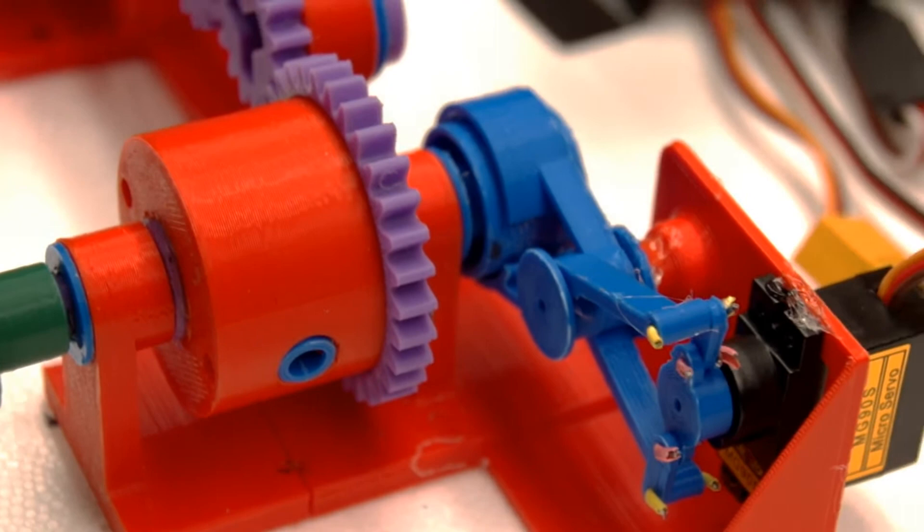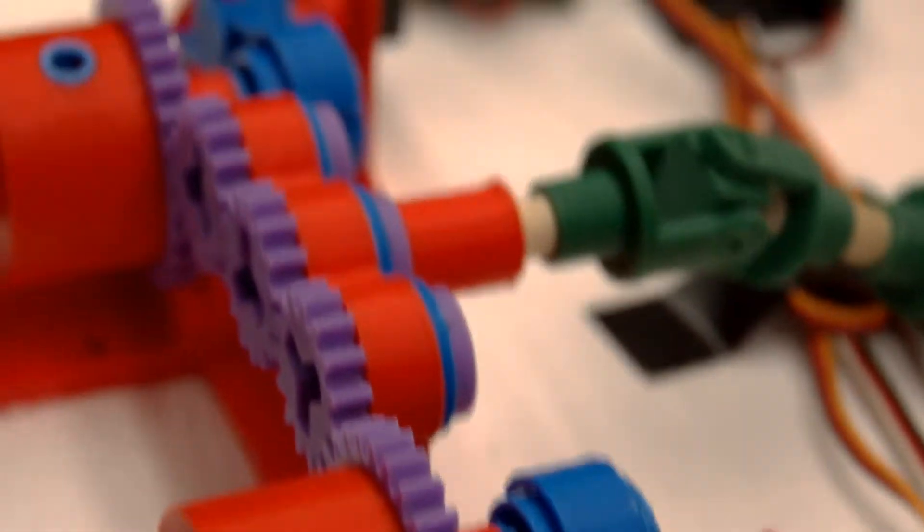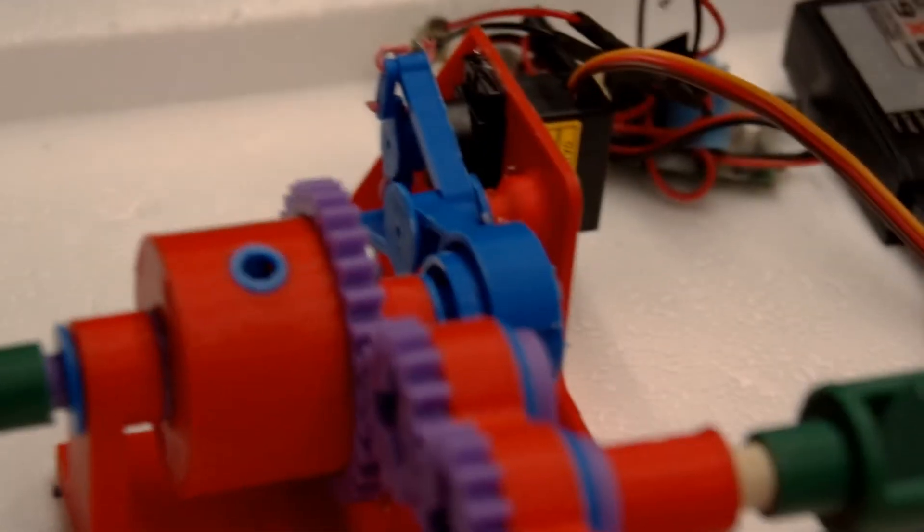This is accomplished by using these servo clutch clamps to slow or lock out the rotation from one side of the differential, forcing the torque to flow into the outboard propellers.